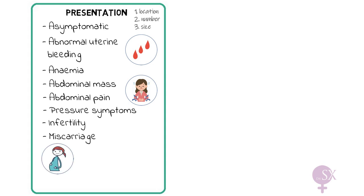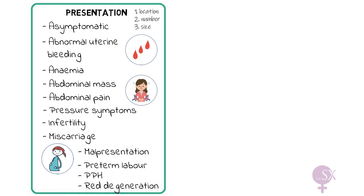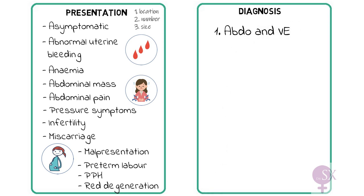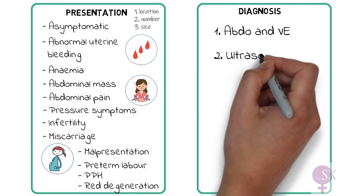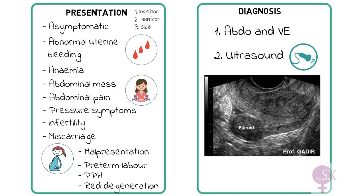In pregnancy, fibroids can result in malpresentation, preterm labor, postpartum hemorrhage, and patients might also present with severe pain due to red degeneration of fibroids. To diagnose fibroids, an abdominal and vaginal exam are very important to see if you can feel any masses or if there is any tenderness, which is a sign of fibroid degeneration. An ultrasound is very important to look at the fibroids, as you can see from this image. An MRI is sometimes also carried out if you are planning an intervention, such as uterine artery embolization.